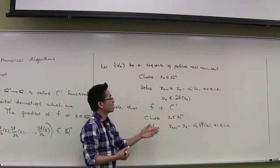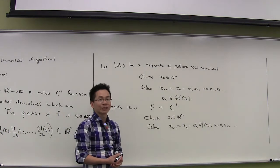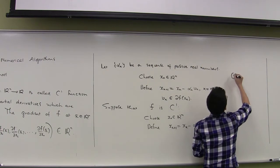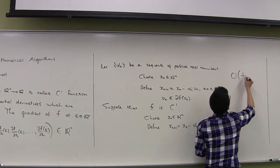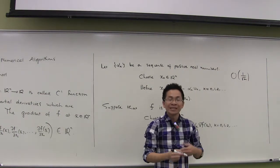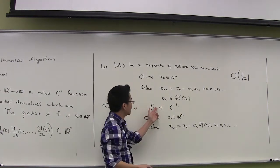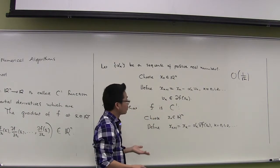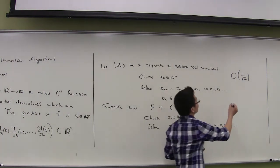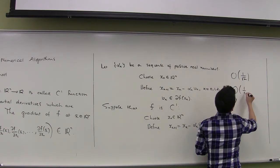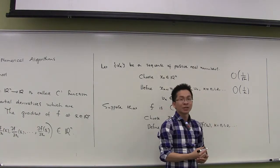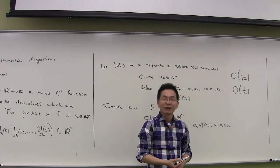I'm going to discuss the convergence of the gradient algorithm. As you know, the subgradient algorithm converges with convergence rate of big O of 1 over square root of k, and this convergence rate is slow in general. In the case where the function f is C1, we will show that under some condition on f, we can achieve the convergence rate of big O of 1 over k, which is a really big improvement.